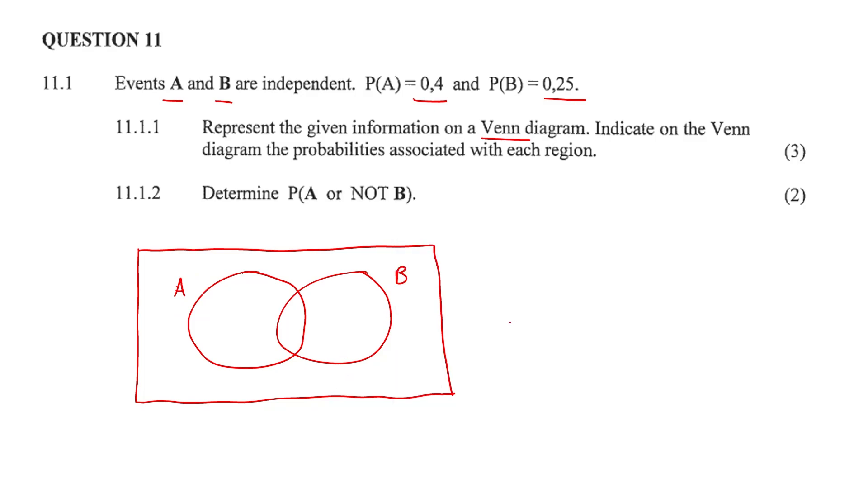So the events are independent, which means that to get their intersection we find the product of both events. The product 0.4 times 0.25. So the probability of A occurring times the probability of B occurring would give us 0.1, and that is going to be the intersection.